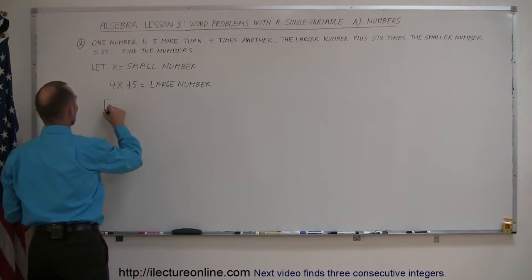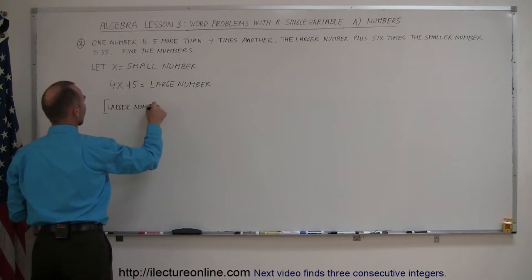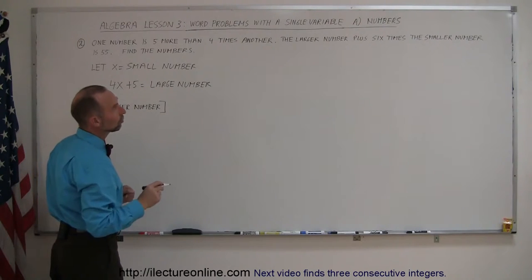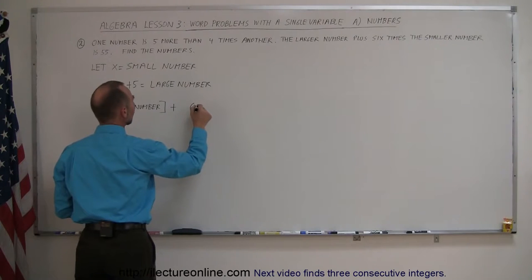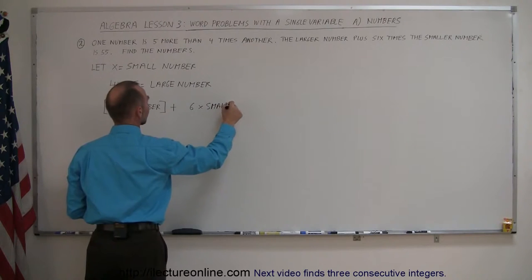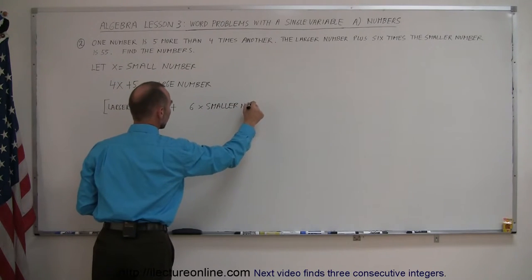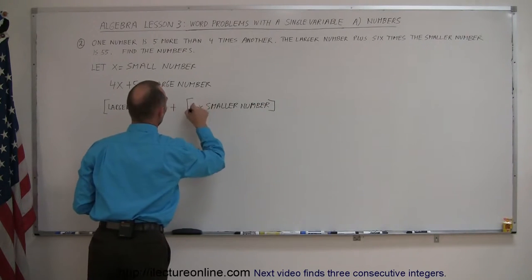So you could say the larger number, and add that to six times the smaller number. Plus six times the smaller number. And when we add them together, we should get 55.